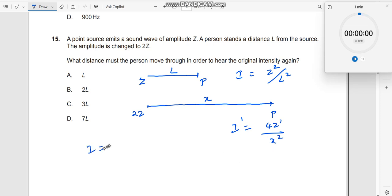He says I equals I'. So as a result, we have Z squared by L squared equals 4Z squared divided by x squared. Z squared cancels out, so I have x squared equals 4L squared. X is equal to 2L.